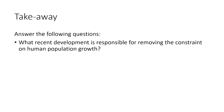This is a takeaway slide. I'll be interspersing these throughout lectures so you know what you need to know for the weekly quizzes, midterms, and final exams. The main takeaway here is: what is most responsible for removing the constraint on human population growth? It is increased agricultural productivity, and that is due to technological innovation and invention, and then farmers who are willing to adopt those technologies.